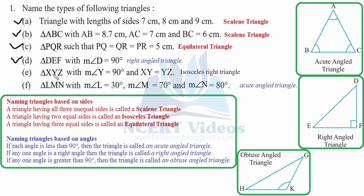Part e: Triangle XYZ with measure of angle Y equal to 90 degrees and the rest of the two sides are equal. Therefore, based on sides, it is isosceles because two sides are equal. Also, one of the angles is 90 degrees. We can name a triangle based on angles or sides, so here it is both isosceles and right angled.